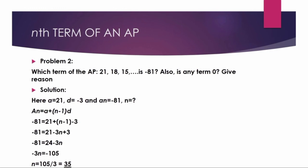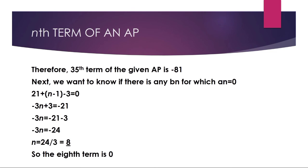For the second part, to check if any term equals 0, we set A_n equal to 0: 21 plus (N minus 1) times minus 3 equals 0, that gives 3N minus 1 equals 21, so N equals 8. Therefore the 8th term of this AP is 0.